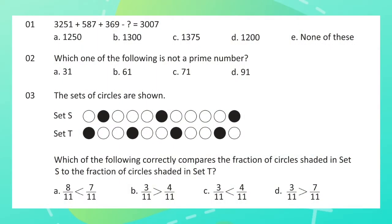Question 1: 3,251 plus 587 plus 369 minus what equals 3,007? Question 2: Which one of the following is not a prime number?